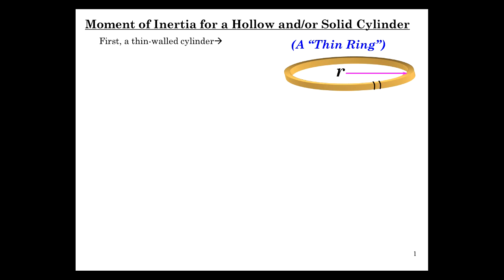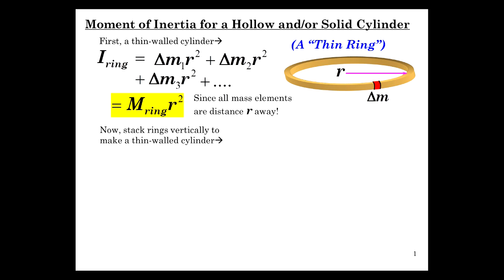So let's take a little delta m and consider that the moment of inertia of the ring is delta m r squared, delta m1 r squared, plus the next one, plus the next one, etc. All the delta m r squareds, which is m ring r squared. You can all simplify down to the total mass of the ring times the radius squared, because every point of mass on the ring is distance r away, the same r.